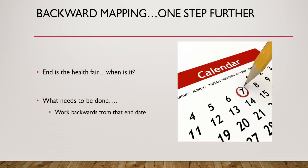Taking backward mapping one step further, we can actually use it in planning the health fair. When we start with the end, the end is the health fair date — what needs to be done — and we work backwards from that end date. So if the health fair were April 7th, what needs to be done by April 1st, what needs to be done by March 20th, what needs to be done by March 15th, and so on.